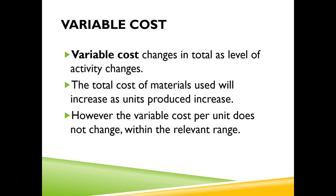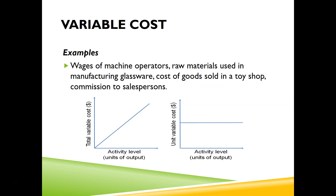Now let's talk about variable cost. Variable cost changes in total as the level of activity changes — if I produce more, I need to incur more cost for materials, and these are called variable costs. However, the variable cost per unit does not change within the relevant range. Examples of variable costs include wages of machine operators, raw materials, cost of goods sold, and commission to salespeople.